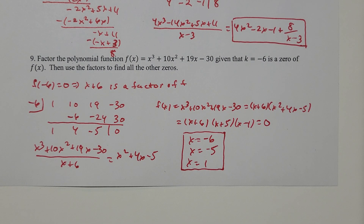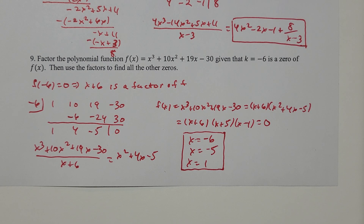Problem number nine is what we're on here now. They want us to factor the polynomial f of x equal x cubed plus 10x squared plus 19x minus 30, given that k equals negative 6 is a zero of f of x. And we're going to use that to find the other zeros.